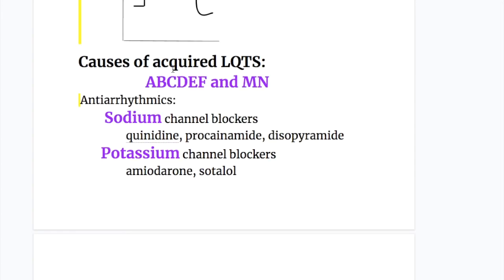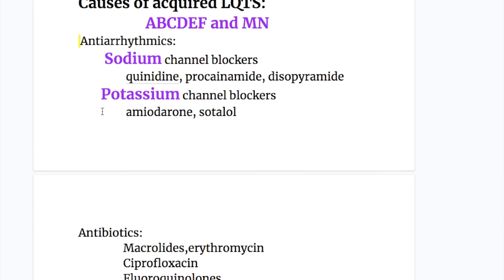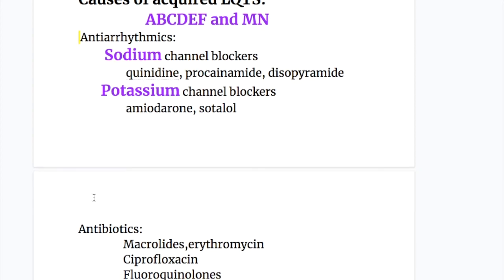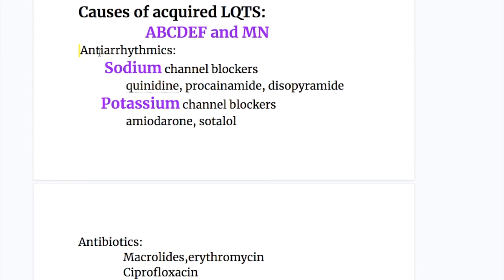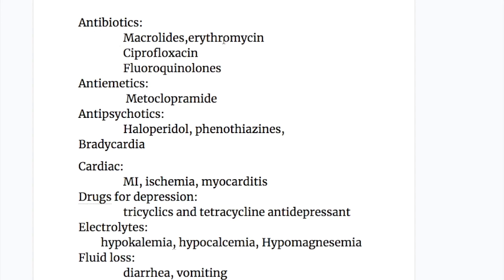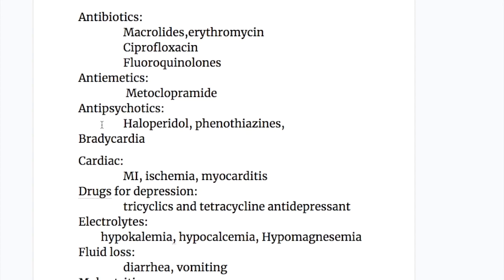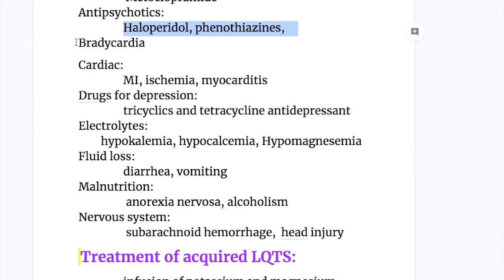Now the causes of acquired LQTS. I have a mnemonic: ABCDEF and MNL. A: there are four A's - antiarrhythmics, antibiotics, anti-emetics and antipsychotics. Amongst the antiarrhythmics: sodium channel blockers and potassium channel blockers. The sodium channel blockers are quinidine, procainamide and disopyramide. Amongst the potassium channel blockers: amiodarone and sotalol. Amongst the antibiotics, especially macrolides - erythromycin may cause LQTS. Ciprofloxacin and fluoroquinolones may also cause. Amongst the anti-emetics: metoclopramide. Amongst the antipsychotics: haloperidol and phenothiazine derivatives may cause. B for bradycardia. C for cardiac disorders: myocardial infarction, ischemia and myocarditis cause torsades de pointes that causes ventricular tachycardia and LQTS.